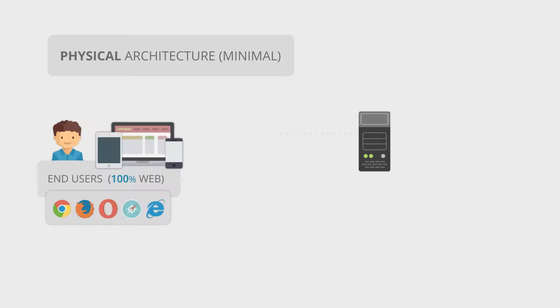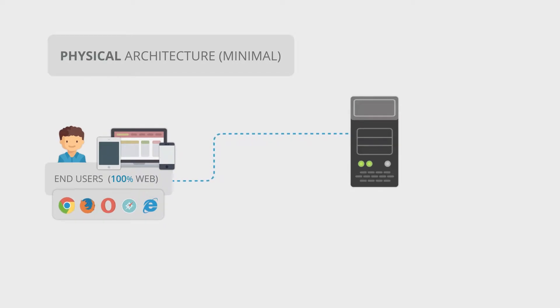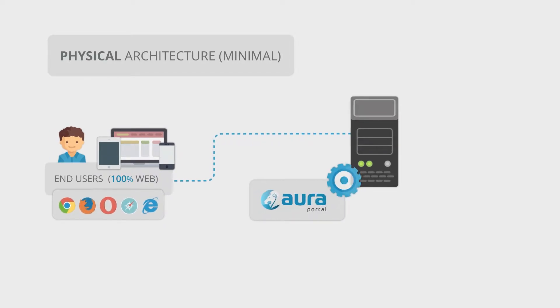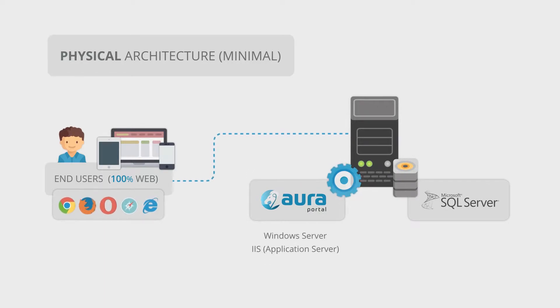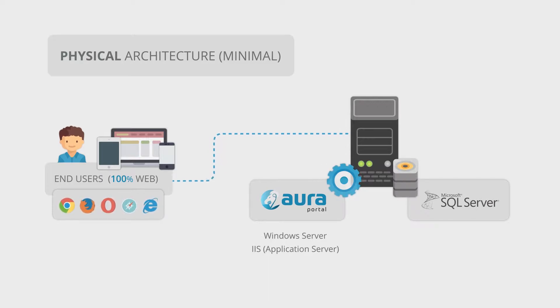The minimum physical architecture to launch an Oroportal installation is an application server with Microsoft SQL Server, which can coexist in the same physical server. The application server requires a Windows server with IIS.